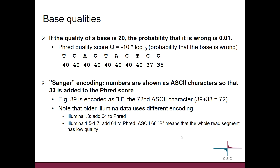Let's look at those base qualities. Every base in the read has a confidence value which tells you how likely it is that that base call is wrong. This is on a so-called PRED scale. Let's say a base would have a probability of being wrong of 1 in 100. We take log 10 of that, which is minus 2, then multiply by minus 10, giving us 20. So a PRED score of 20 means that the probability that that particular base call is wrong is 0.01.